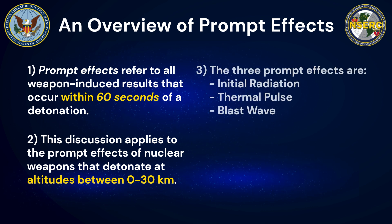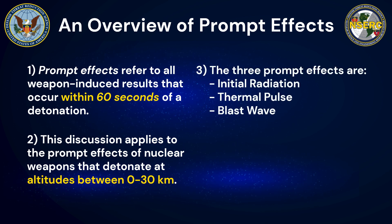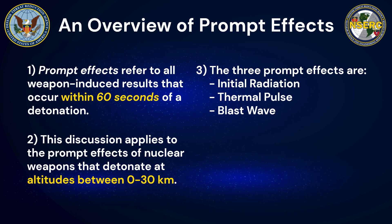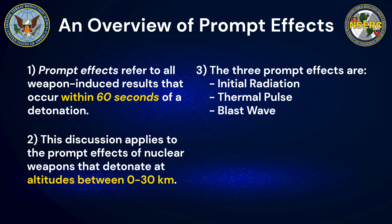The three specific prompt nuclear weapon effects we will now briefly describe are the initial radiation, thermal pulse, and blast wave, which occur in the same order they are listed here.